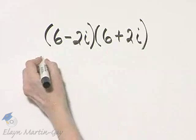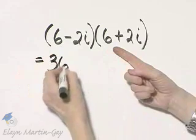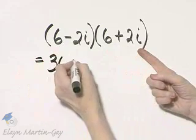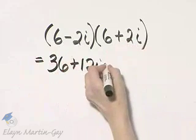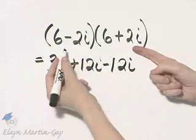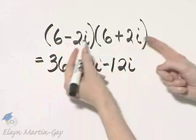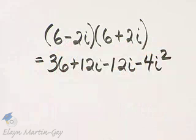So that will be first times first, that's 6 times 6, or 36, product of the outside terms, that's plus 12i, product of the inside terms, that's minus 12i, and then last times last, that's minus 4i squared, minus 4i squared.